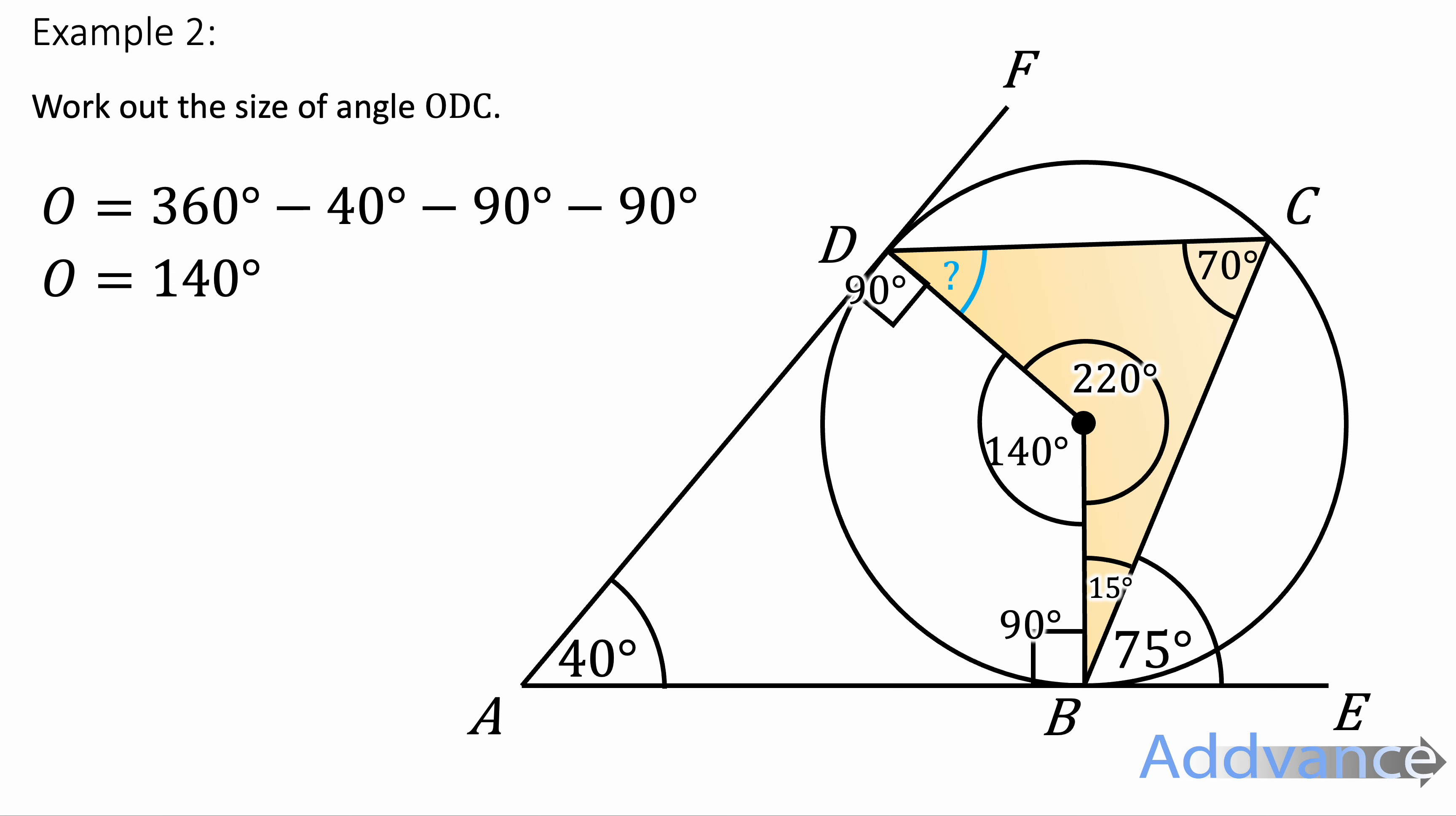And now I have three angles of the quadrilateral. To find the final remaining angle, I do 360 minus 220 minus 70 minus 15. And I get 55 degrees. That is the final answer.